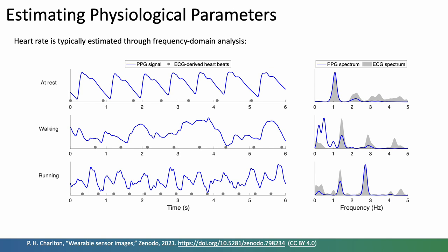Next, heart rate. Heart rate is typically estimated through frequency domain analysis. This plot shows examples at rest, whilst walking, and whilst running, and they show the PPG signal in blue and the reference heartbeats in grey from the ECG. On the right hand side is the accompanying frequency domain analysis of these signals. And for the signal at rest you can see that the PPG spectrum shown in blue is very similar to the ECG spectrum in that they both contain a peak at just over one hertz which corresponds to the heart rate.